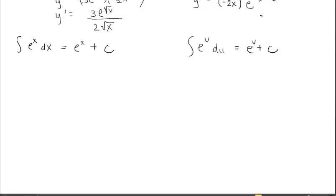We'll likely use the composite formula more than the basic one, since the basic formula only applies to the parent function e to the x. Most functions we'll deal with are composite natural exponential functions with more complicated exponents. When you identify a natural exponential in the integrand, u-substitution to match the e-to-the-u formula is one strong approach.